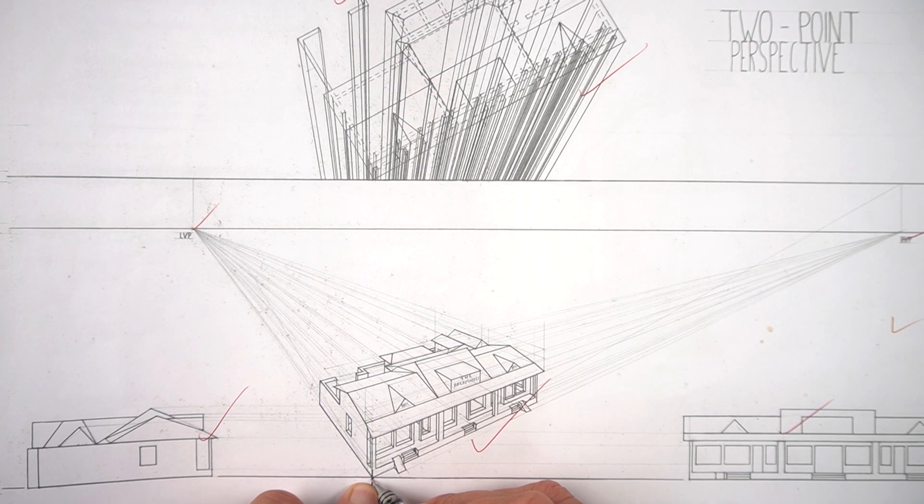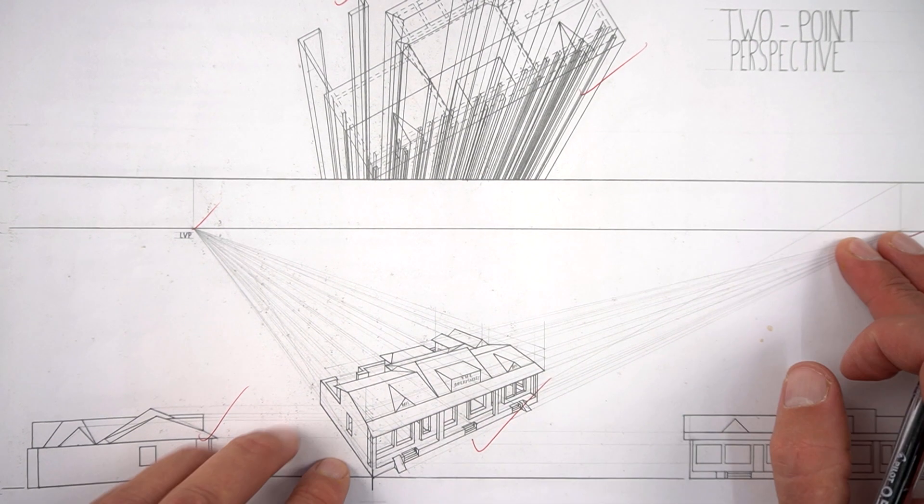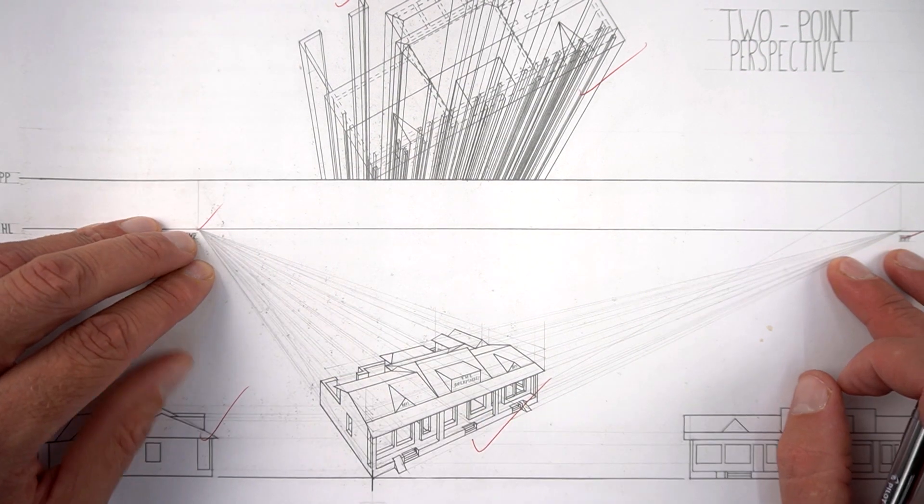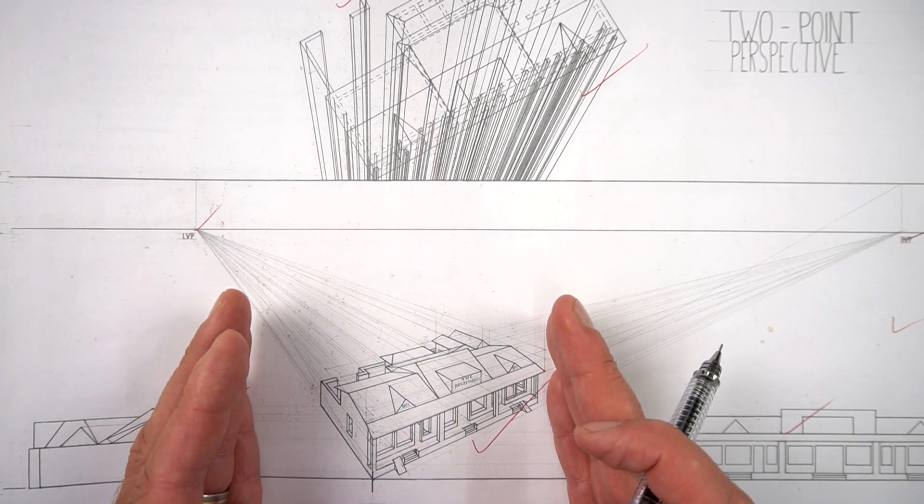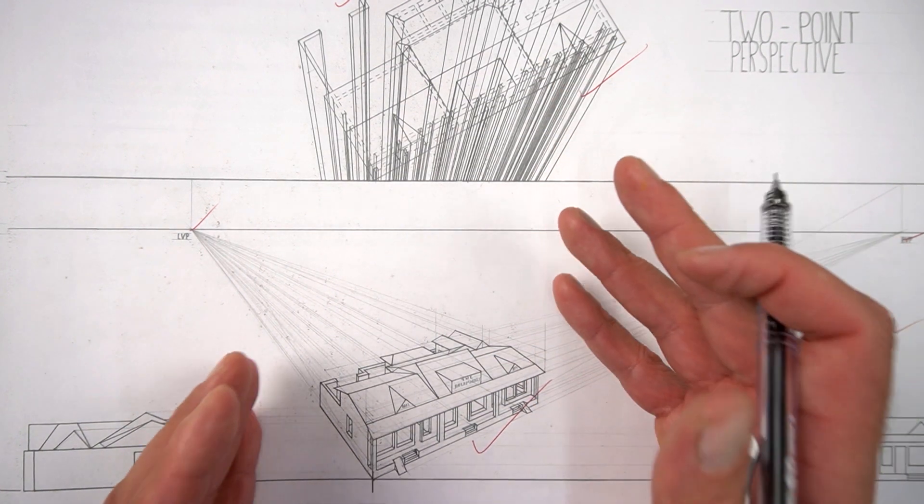So you'll start your drawing just as you do with any other two-point perspective. Make sure you've got your projection lines correctly and you'll have to take the necessary time to get this drawing correct.